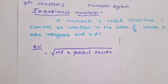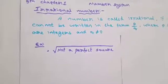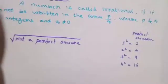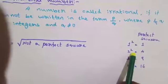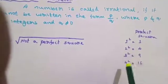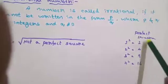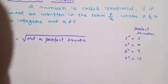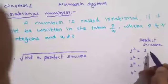Irrational numbers include square roots of non-perfect squares. Perfect squares are: 1 squared equals 1, 2 squared, 3 squared, 4 squared — giving 1, 4, 9, 16, 25. These are perfect squares.